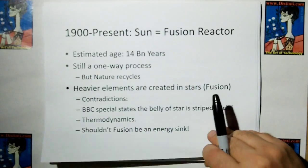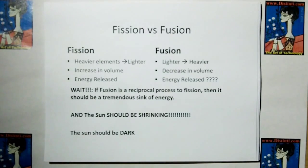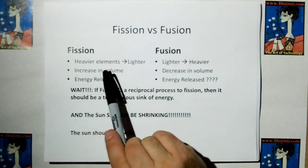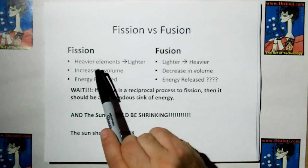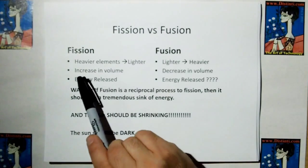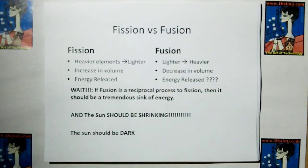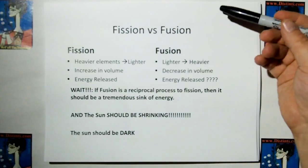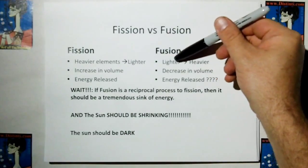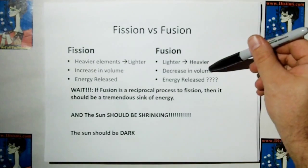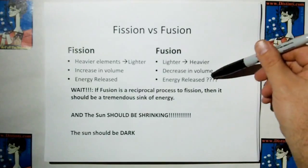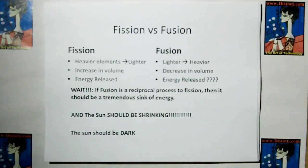And shouldn't fusion be an energy sink? Consider what we learned in the videos about ethereal mechanics. We said that heavier elements in the fission process, heavier elements go to lighter elements. It has an incredible release of energy and an increase in volume. If fusion is the opposite process, we would think lighter elements are fusing into heavier elements, which should be a decrease in volume, which it is. It should be an energy sink, but we're seeing, we think energy is released in fusion.